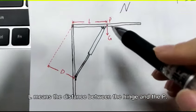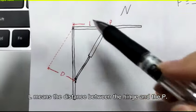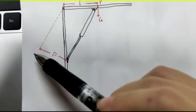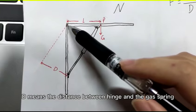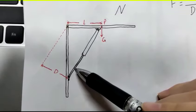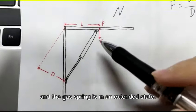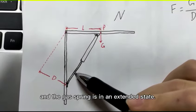L means the distance between the hinge and the P. D means the distance between hinge and the gas spring. And the gas spring is in an extended state.